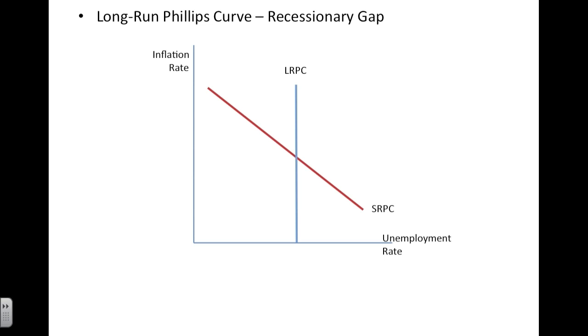The AP exam may also require you to graph a recessionary gap. During a recession, generally prices come down and unemployment rises, so our recessionary gap will end up on the right of equilibrium.